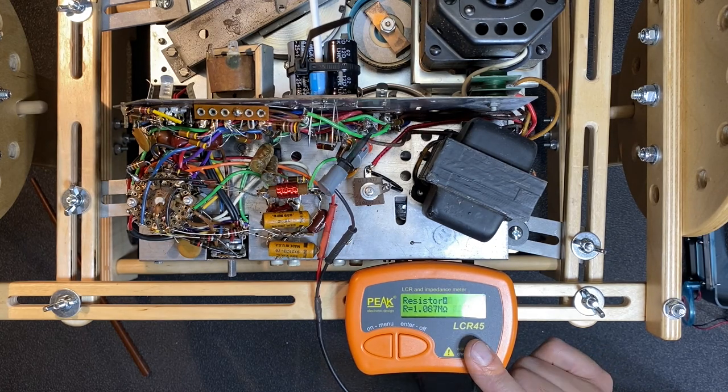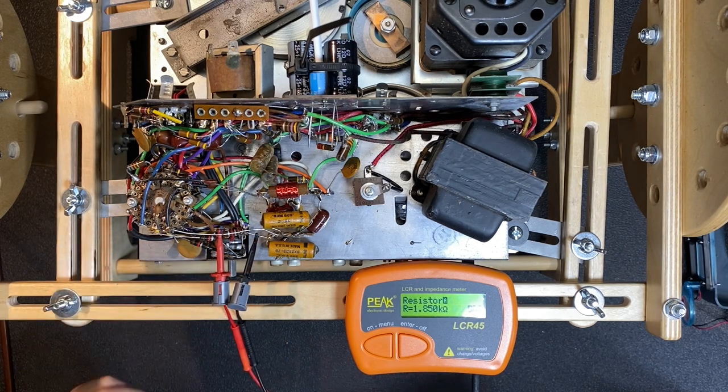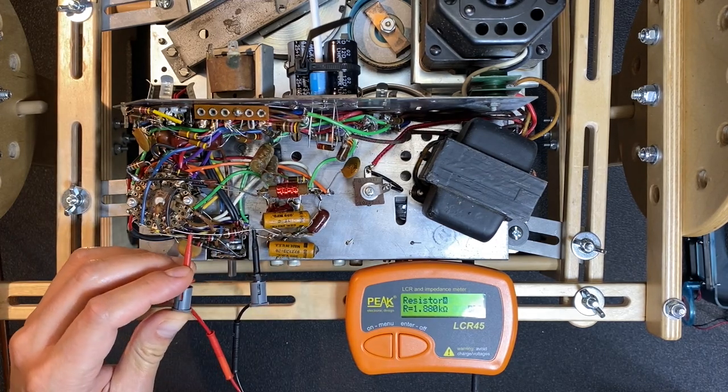Let's check a few more. We have two brown-gray-red resistors here, which should measure 1.8K. Perfect. Let's check the other one. Perfect.